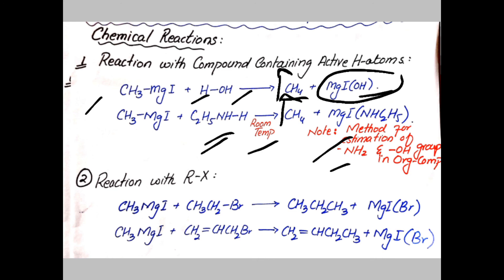Reaction with alkyl halides: Grignard reagent reacts with saturated or unsaturated alkyl halides to produce corresponding alkanes or alkenes. For example, methyl magnesium iodide reacts with ethyl bromide to give propane plus magnesium iodide bromide. Methyl magnesium iodide reacts with propenyl bromide to give butene plus magnesium iodide bromide.